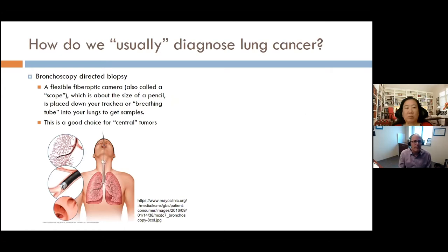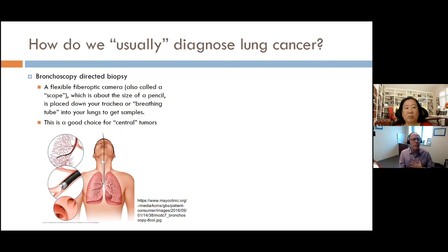A bronchoscopy-directed biopsy uses a bronchoscope — a flexible fiber optic camera about the size of a pencil — that goes down your trachea and into the lungs to get a sample close to where the tumor might be. This works well for central tumors, those near the center of the chest. Since the camera is the size of a pencil, it can only go as far as the airways allow, so it can't reach the edges of the lungs.